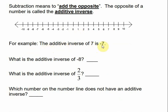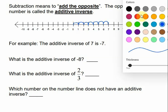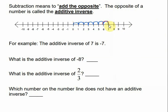The additive inverse of 7 is negative 7 — that just means it's the opposite. For example, if I were to go positive 7 spaces, the opposite direction would be negative 7 spaces, which puts me back at 0. So they undo each other.